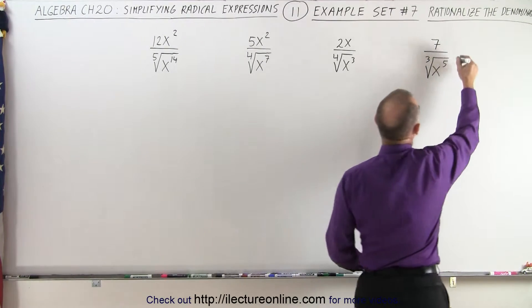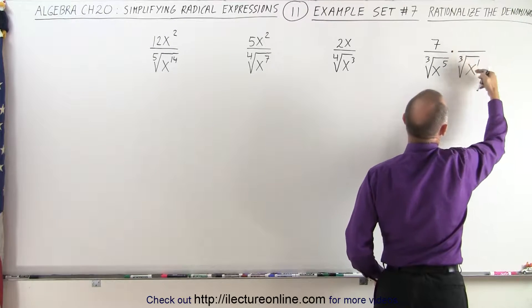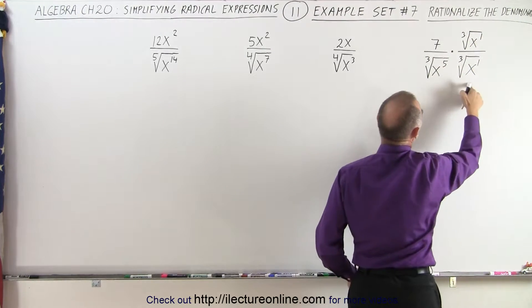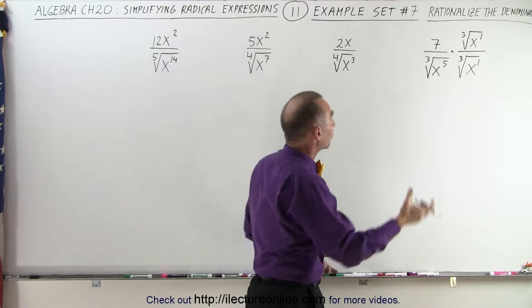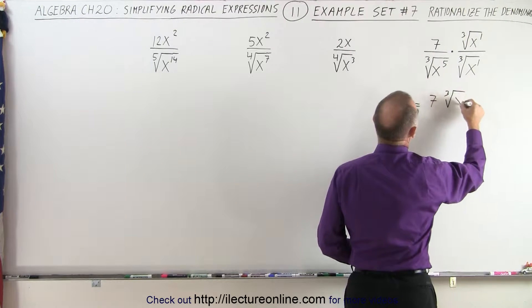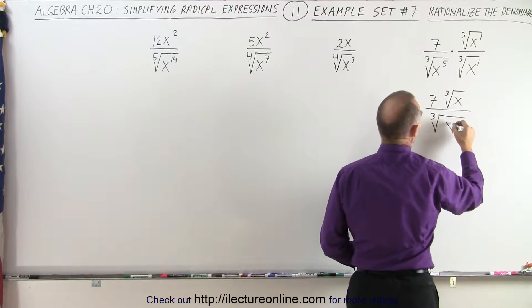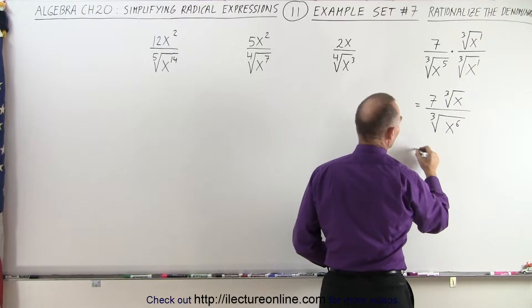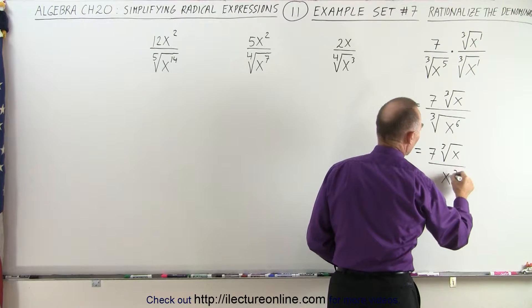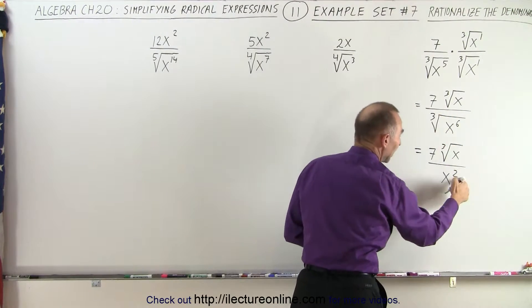In this case we're going to multiply both the numerator and the denominator by the cube root of x to the first power. X to the first power is used because when we multiply we'll get x to the sixth, and x to the sixth is a multiple of the cube root. So this becomes equal to seven times the cube root of x divided by the cube root of x to the fifth times x to the first, which is x to the sixth. Three goes into six twice, so this becomes seven times the cube root of x divided by x squared, because the cube root of x to the sixth — we simply take the power and divide by the root, and that becomes the new exponent.